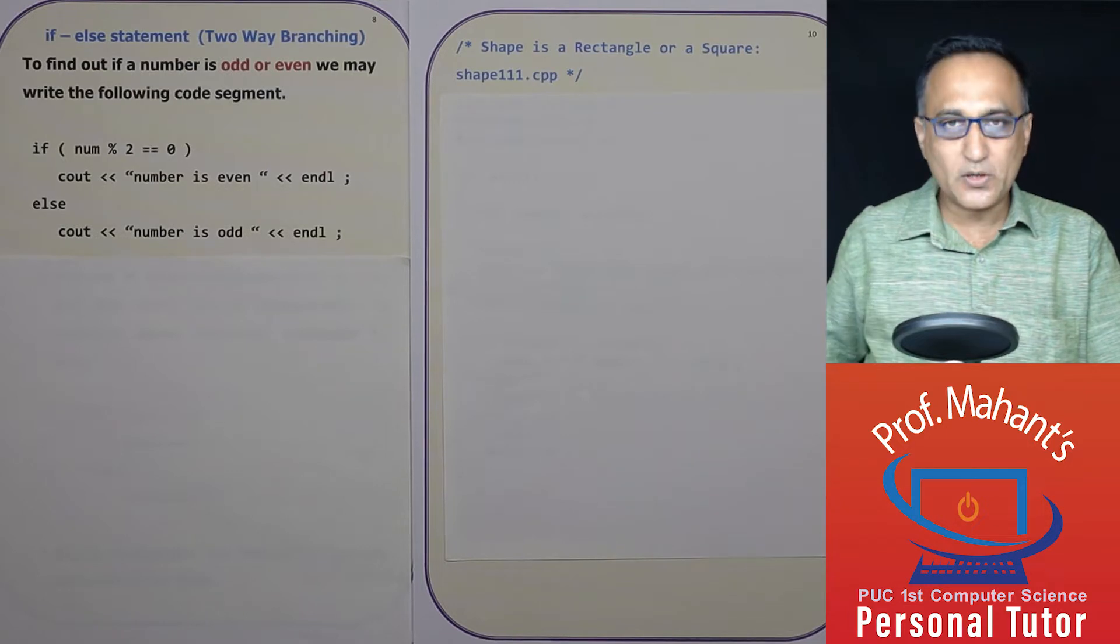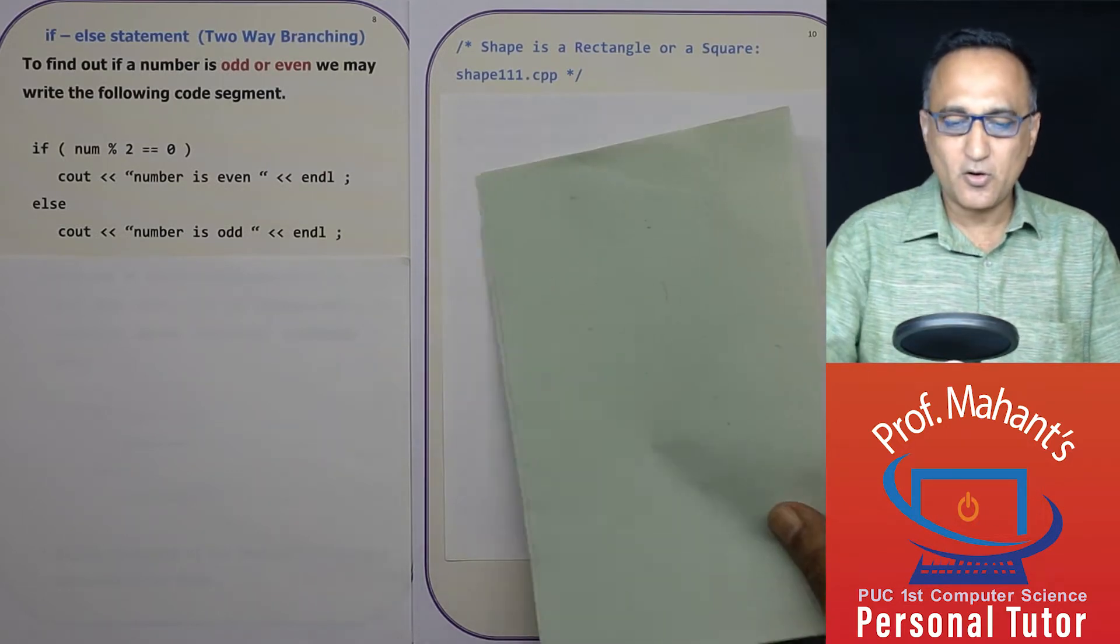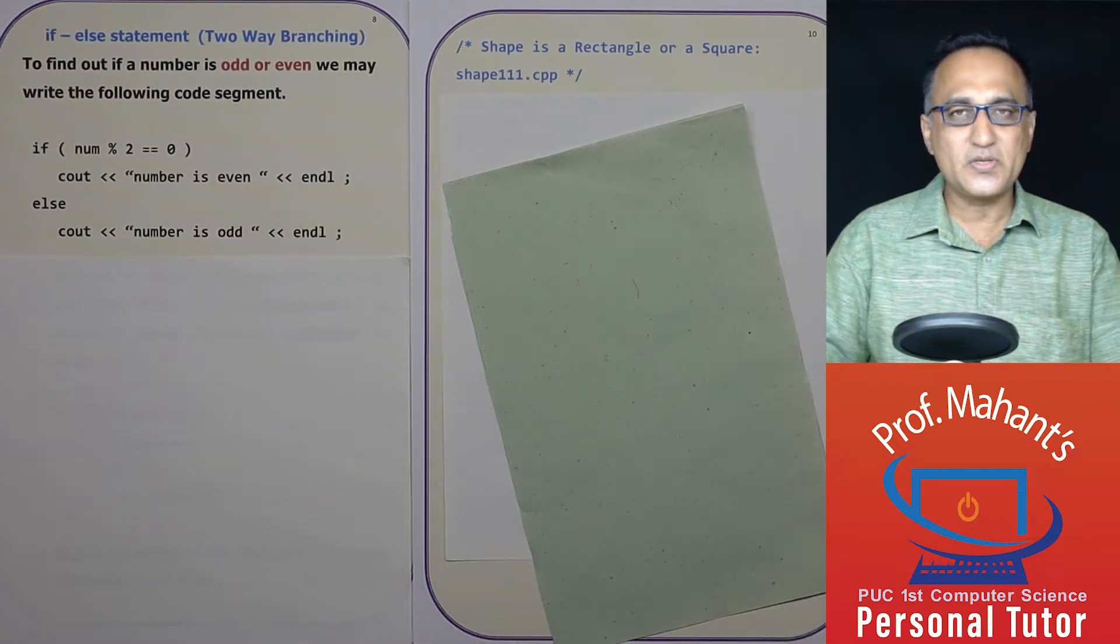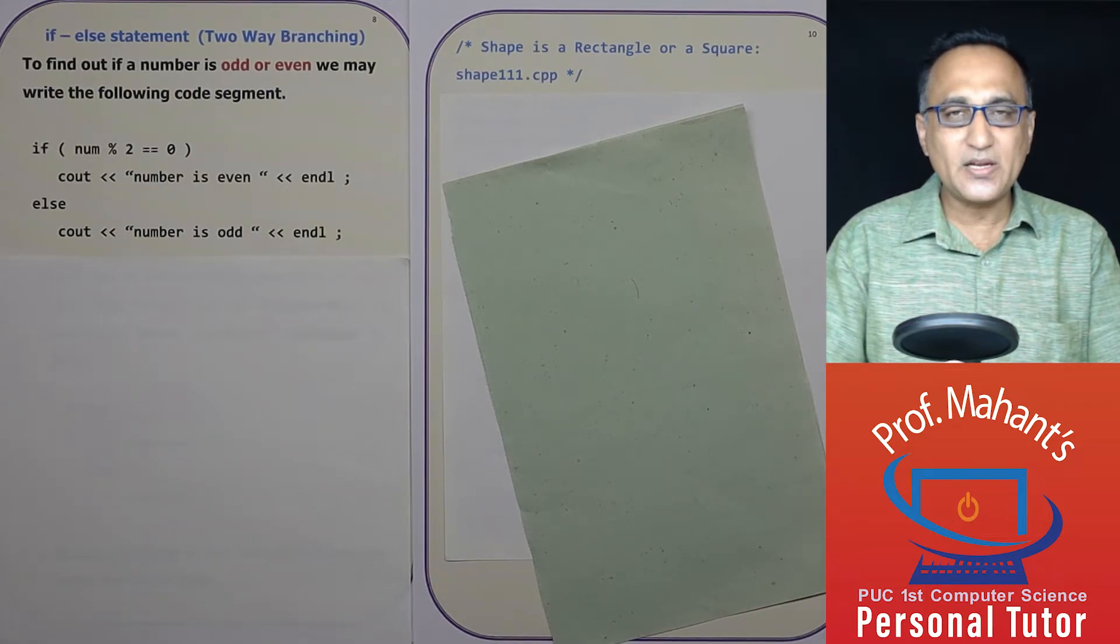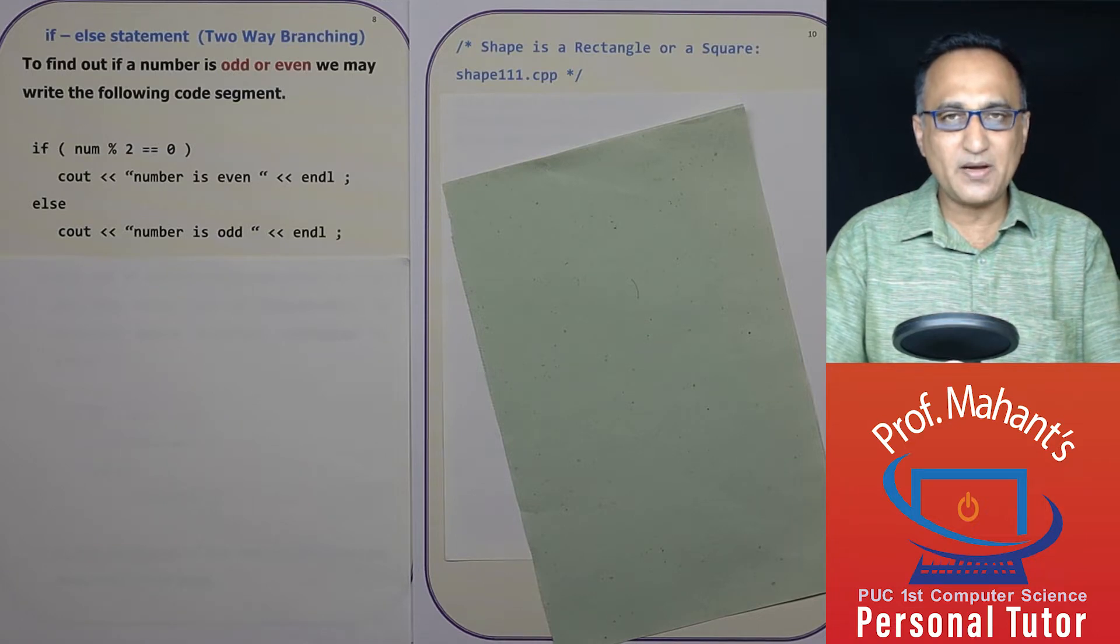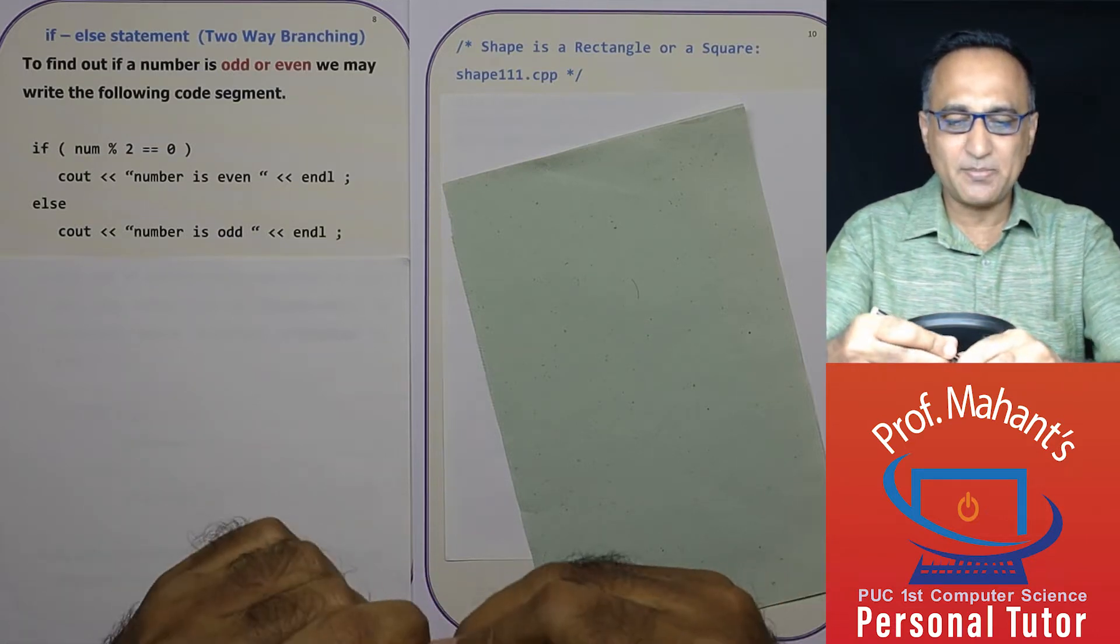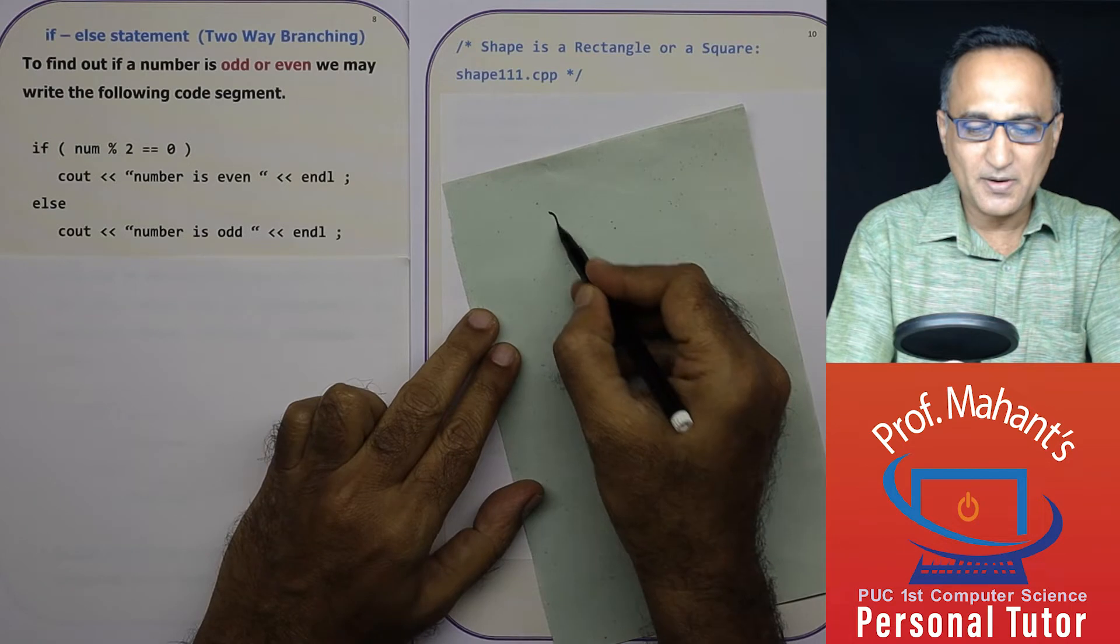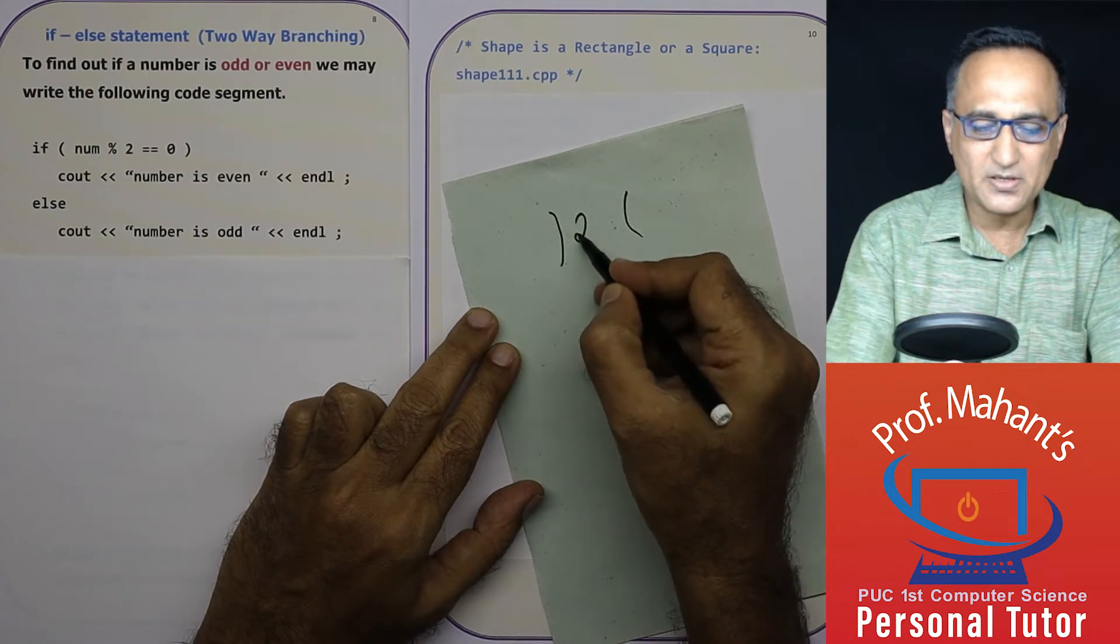Suppose I have to find out if a number is even or odd. So what I can do is divide that number by two. If the remainder happens to be zero, I can say the number is even. If the remainder happens to be one, I can say the number is odd.